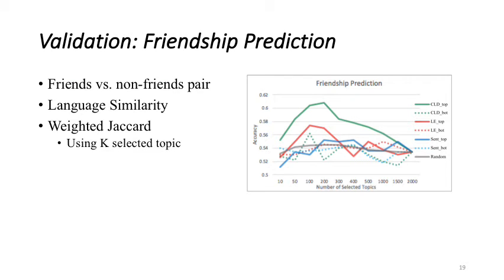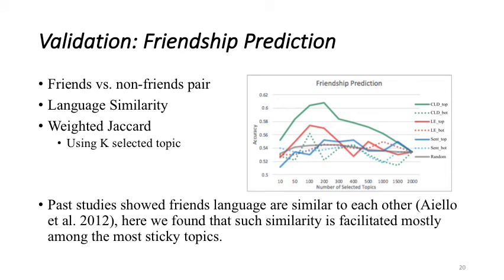Our user level task is predicting the friendship connection. This is a binary task. For each user we got one friend and one stranger. And we look at the similarity of his language to their friend versus the stranger. The pair that got higher similarity we choose as the friends pair. To calculate such similarity we use weighted Jaccard coefficient over the top k topics. And here is the result of selecting top k topics with sorted CLD, lexical emergence and sentiment, as well as their reverse ordering. So the green line is the sorted CLD which got better accuracy than all the others. And increasing the number of topics increases the accuracy up until 200 topics, and then it started to fall down. Previous studies showed friends' language are similar to each other. Here we found that such similarity is mostly from the most sticky topics. And this is one of the main findings of this paper.